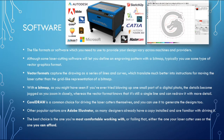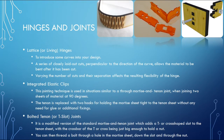The file formats or software needed to provide your design vary across machines and providers. Vector formats capture the drawing as a series of lines and curves, which translate much better into instructions for moving the laser cutter than the grid-like representation of a bitmap. There is also no loss of fidelity as you resize the image — with a bitmap the details become jagged as you zoom in, whereas the vector format knows it is a single line and can redraw it with more detail. CorelDRAW is a common choice for laser cutting machines; Adobe Illustrator is another popular option. Most laser cutting work is like traditional cutting, but some physical designs such as lattice or hinge designs are particularly easy to do with laser cutting machines.